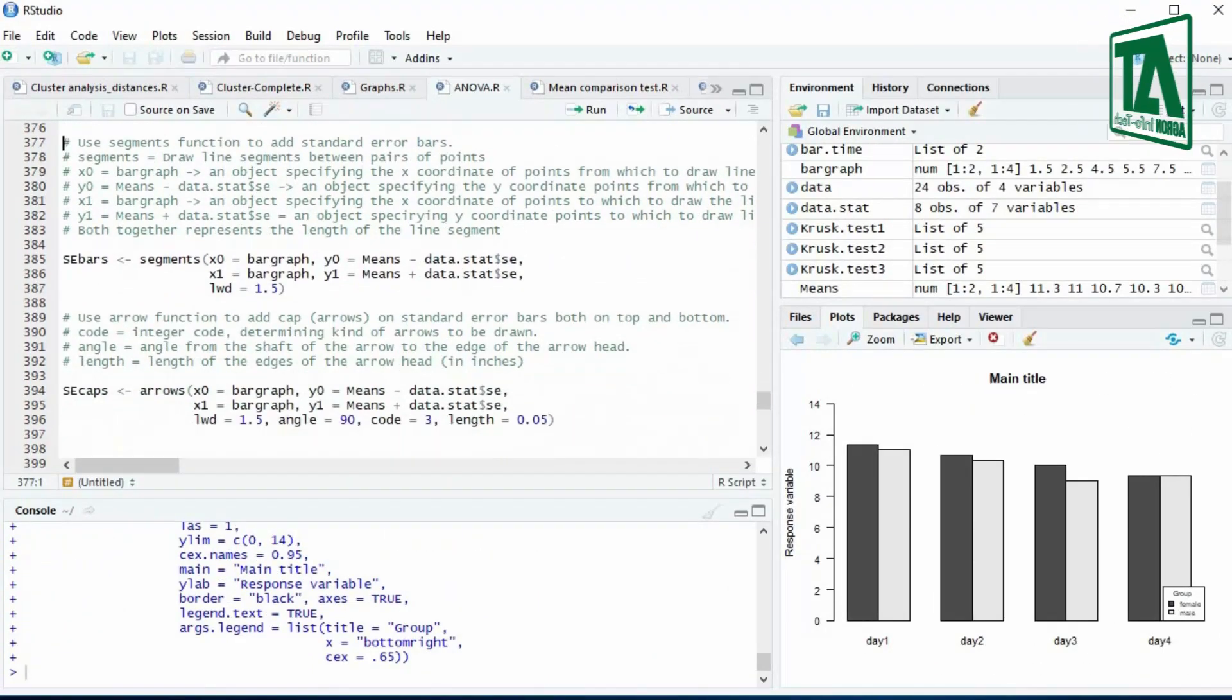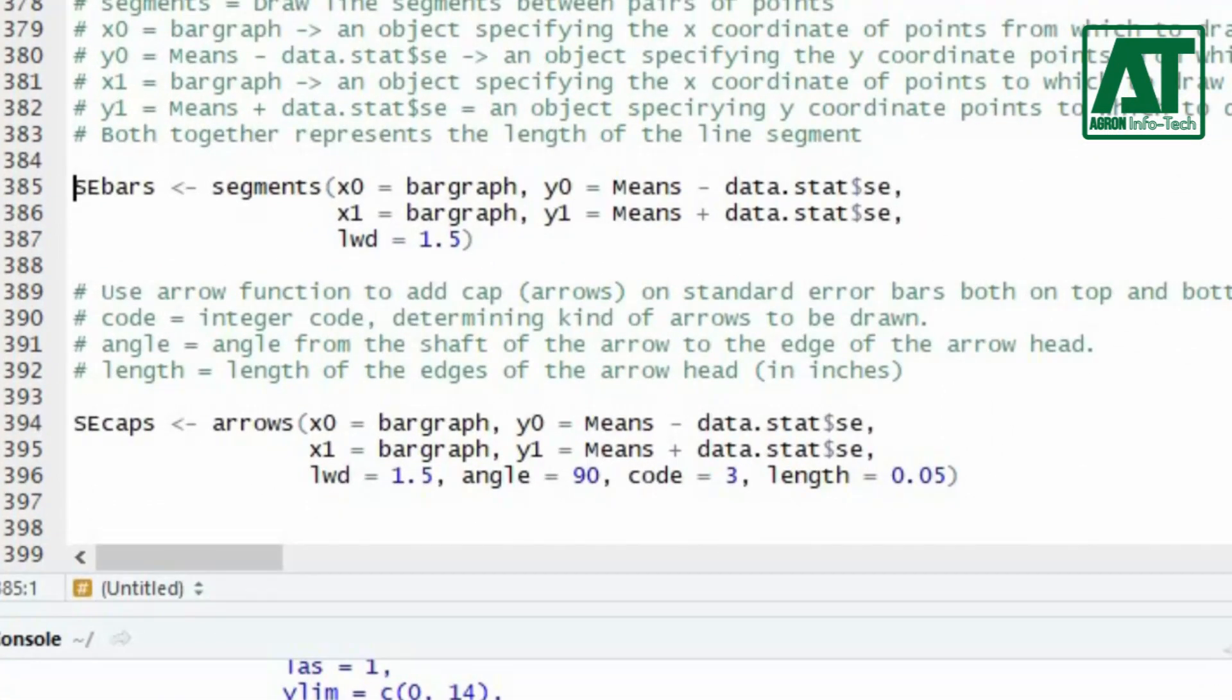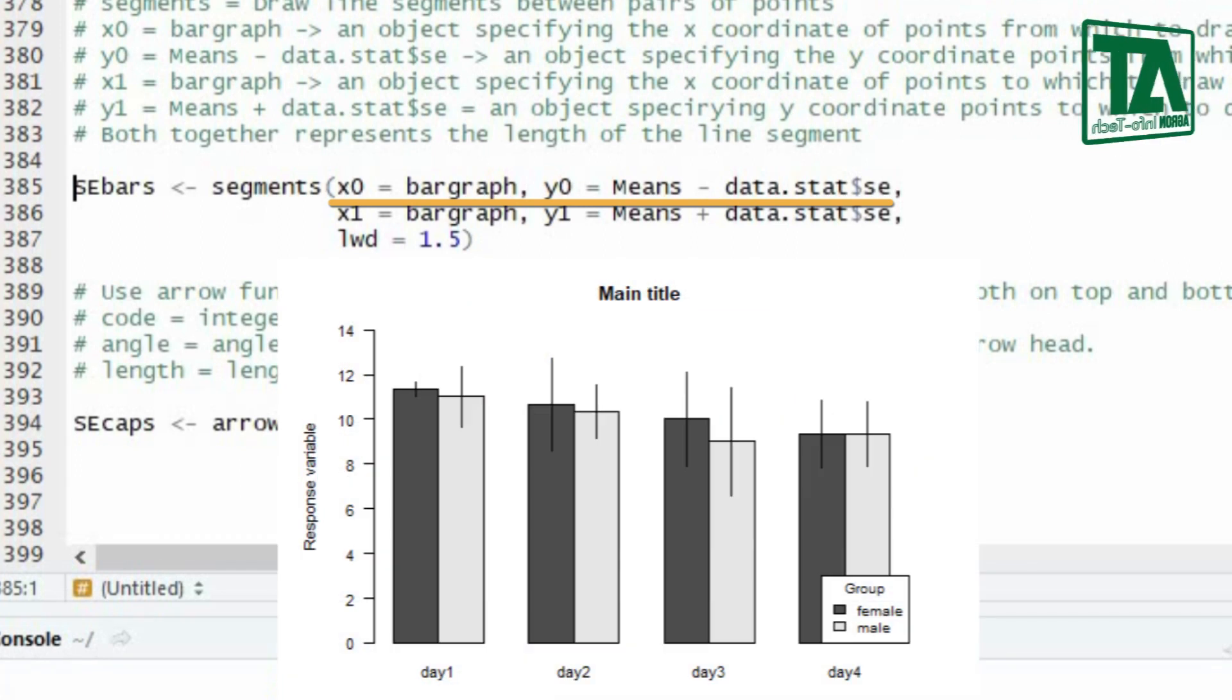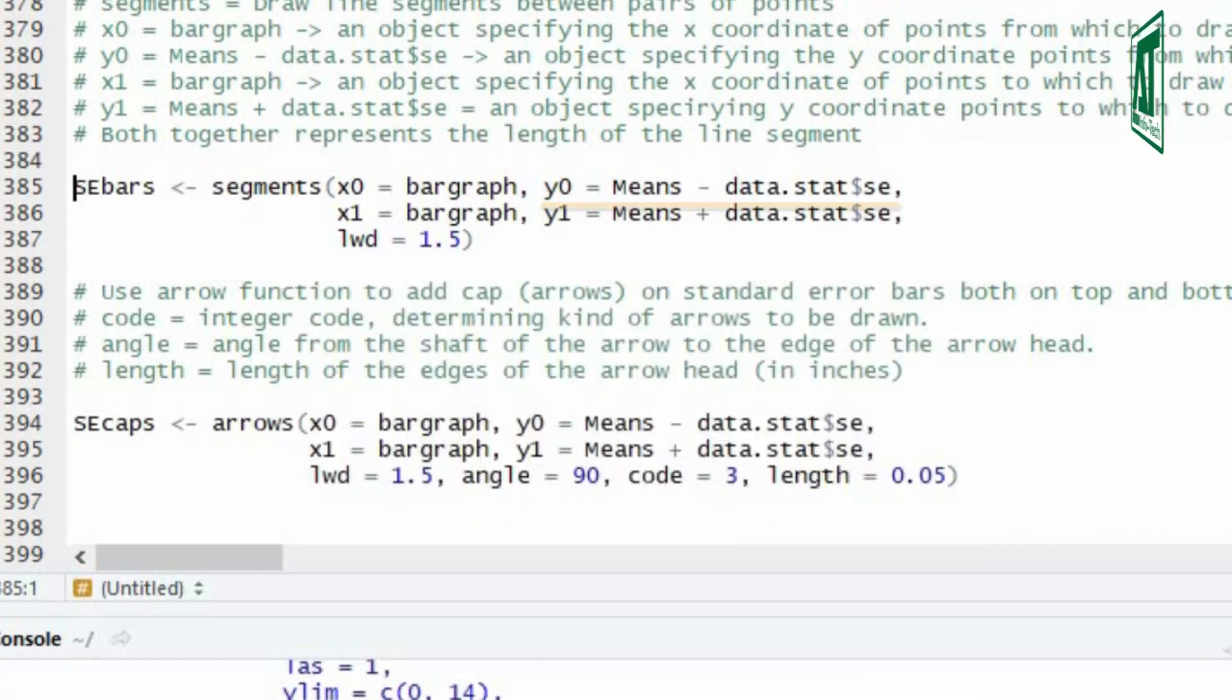Use segment function to add standard error bars. In this function some arguments need to be specified to draw segments or lines representing error bars. X0 and Y0 represent the objects specifying X and Y coordinates of the points from which to draw the line segment. X1 and Y1 arguments represent the X and Y coordinate points showing the upper bound of the line segments. Subtract standard error from the means to show the starting points for line segment on Y coordinate.